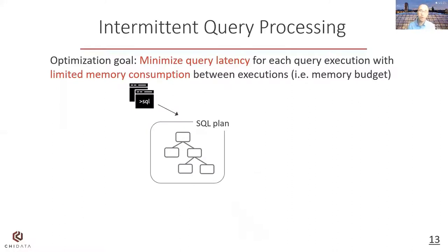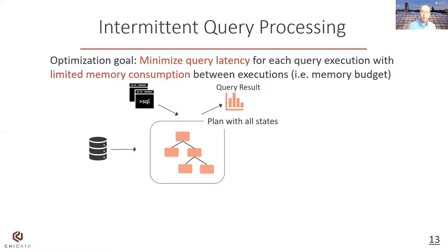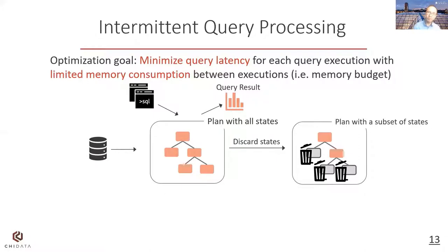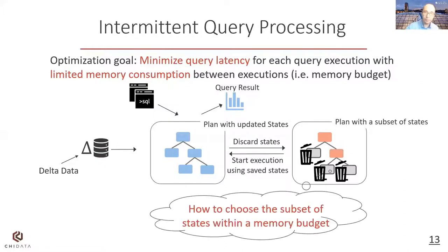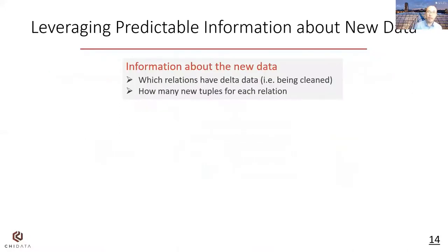To achieve this, we propose intermittent query processing. When one execution is finished, we discard some states to put the query into an inactive state. When new data arrives, we reuse these saved states to quickly process the new data and lower query latency. The new data for each execution is called delta data. The question is how to choose the subset of states within a memory budget. The answer is to leverage information about the new data, like which relations have delta data and how many new tuples are in each relation.